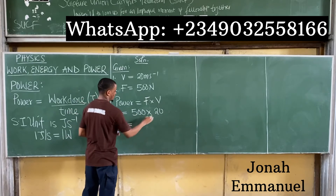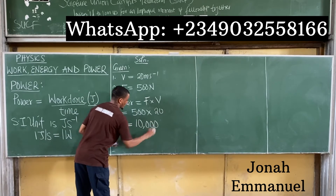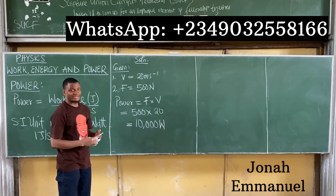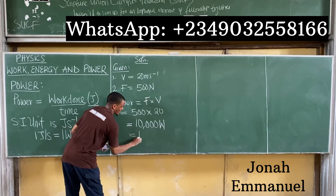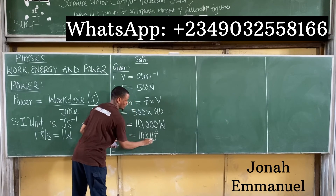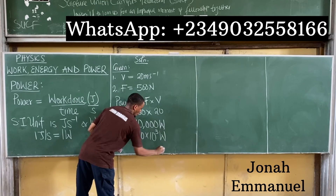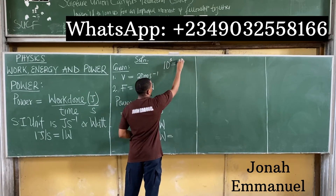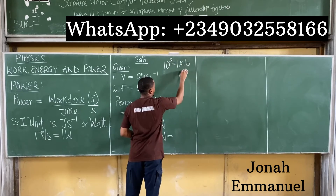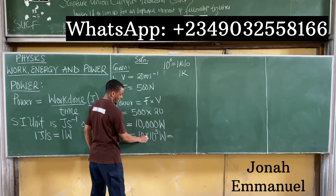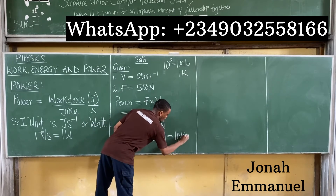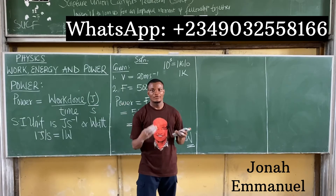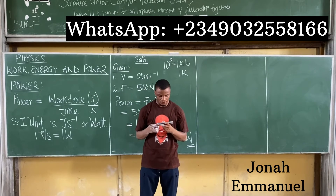Using power equals force times velocity: P = 500 × 20 = 10,000 watts. Converting to kilowatts — since 10³ equals one kilo — this becomes 10 kilowatts. Therefore the engine power of the car is 10 kW.